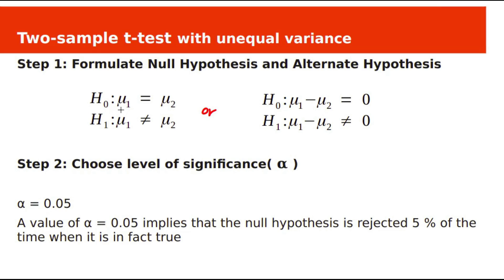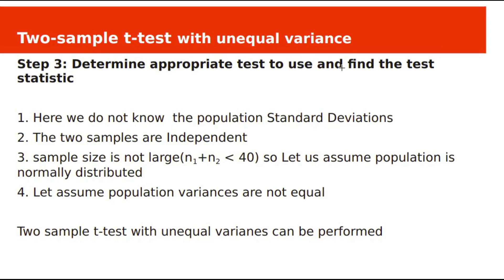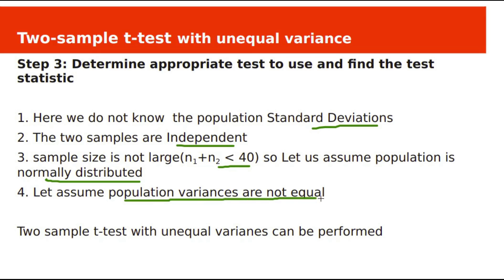The null hypothesis H0 is mu1 equal to mu2, and the alternate hypothesis H1 is mu1 not equal to mu2. We choose alpha equal to 0.05. We don't know the population standard deviations sigma1 and sigma2. The two samples are independent, sample size N1 plus N2 is less than 40, so we assume populations are normally distributed. We also assume population variances are not equal, so we perform the two-sample t-test with unequal variances.